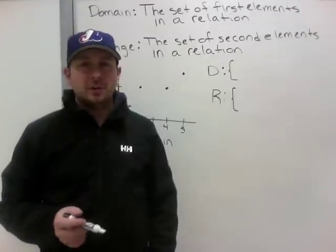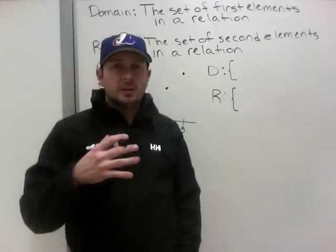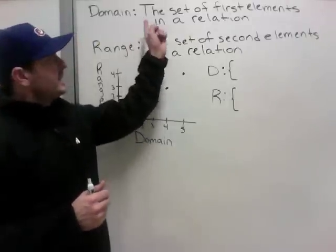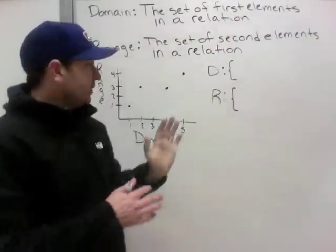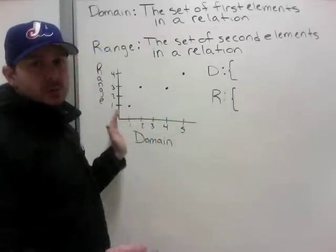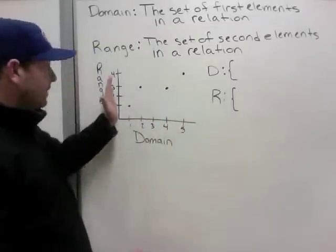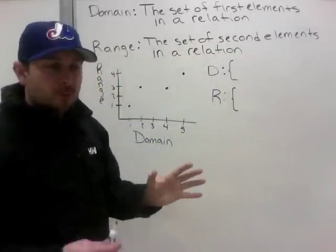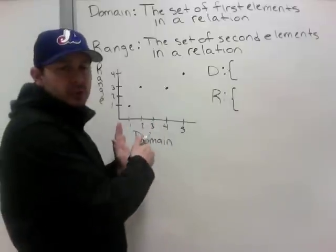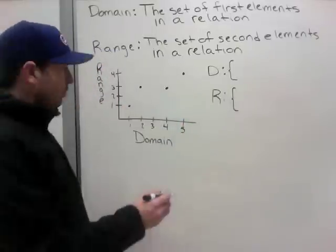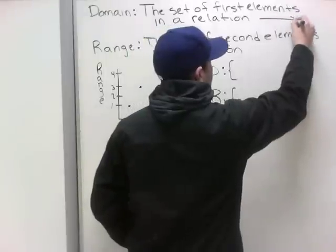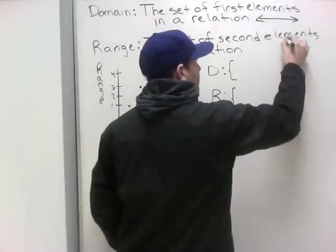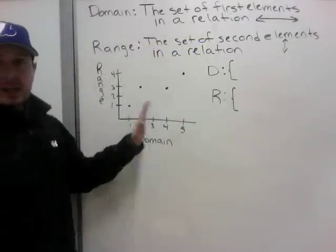Our second learning intention involves domain and range — this is a big one that will follow you through grade 10, 11, and 12. Domain is the set of first elements in a relationship. On a graph, domain is always left and right, or horizontal. Range is the set of second elements in a relation — on a graph, range is always up and down.